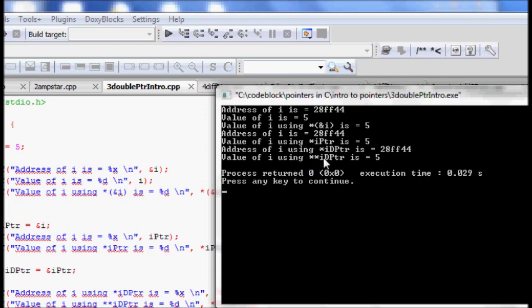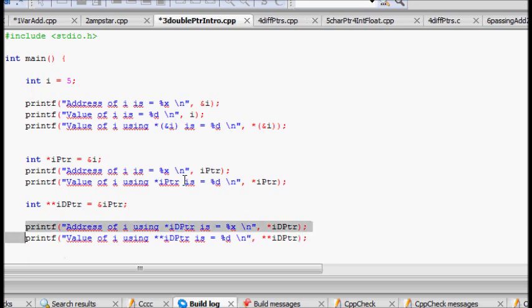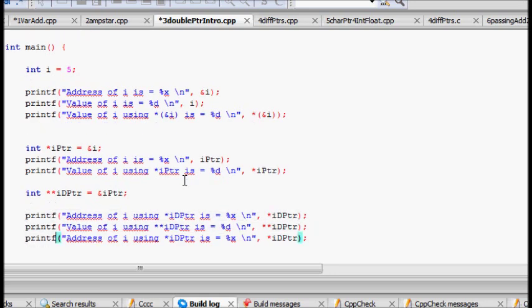So iptr if I do, so using iptr, now what I do, idptr. So let's say what I have printed. So address of i using idptr I have done. And let's try to do what is the address of i using. So let's put one more here. I have forgotten actually.